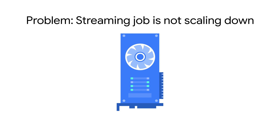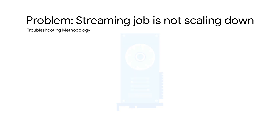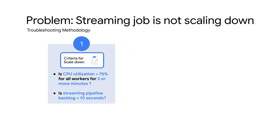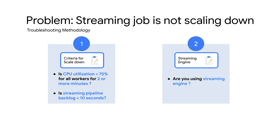The issue is that Dataflow workers for streaming jobs aren't scaling down enough, even though the average CPU utilization stays below 75 percent. To investigate this issue, first validate if the following criteria have been met for scaling down: is the CPU utilization of all the workers less than 75 percent for two or more minutes, and is the streaming pipeline backlog lower than 10 seconds, which is the default criteria?